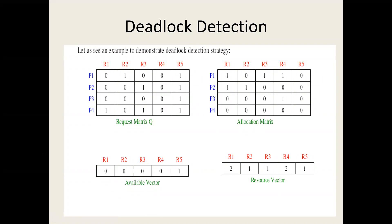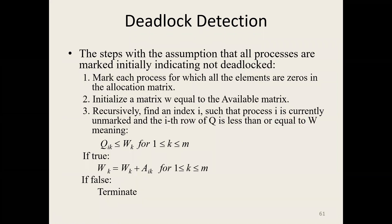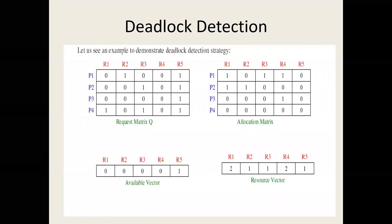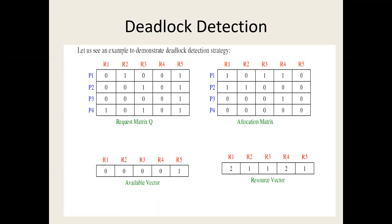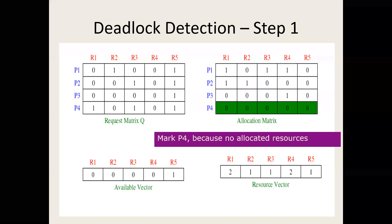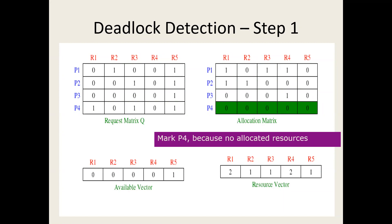So, the deadlock detection. We have the request matrix and the current allocation. From deadlock detection, we first mark each process where all elements are zeros in the allocation matrix. You can see P4 does not have any allocation, which means P4 will not get involved in a deadlock — there is nothing allocated to it. So we mark P4 because it won't be involved in a deadlock.